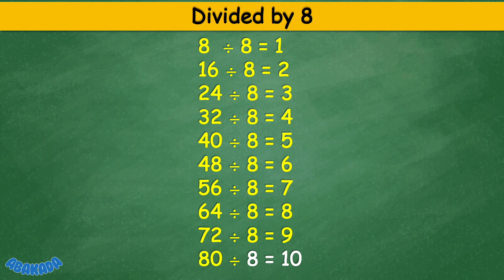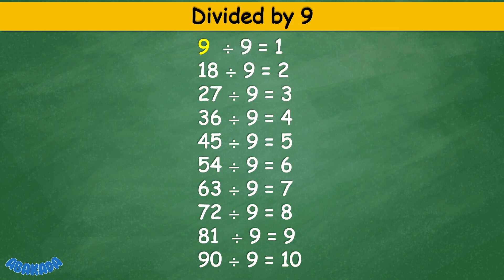80 divided by 8 equals 10. Divided by 9: 9 divided by 9 equals 1, 18 divided by 9 equals 2, 27 divided by 9 equals 3, 36 divided by 9 equals 4, 45 divided by 9 equals 5, 54 divided by 9 equals 6, 63 divided by 9 equals 7, 72 divided by 9 equals 8, 81 divided by 9 equals 9.